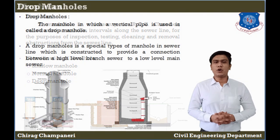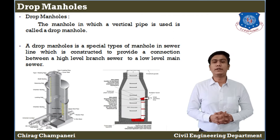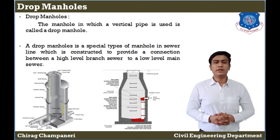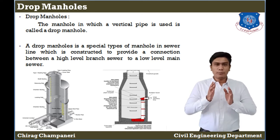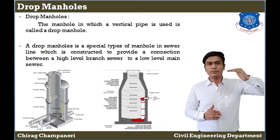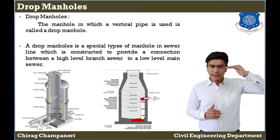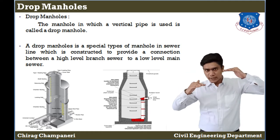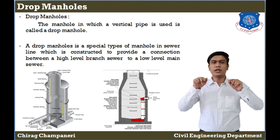A drop manhole is one in which a vertical pipe is used. Its purpose is that when the level of our sewer pipe is increased and we need to reduce the level, we construct a drop manhole.